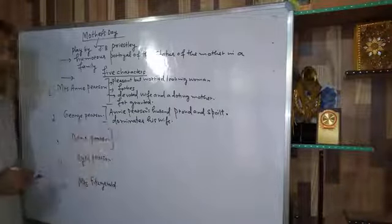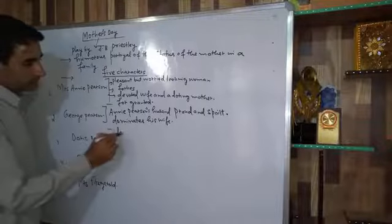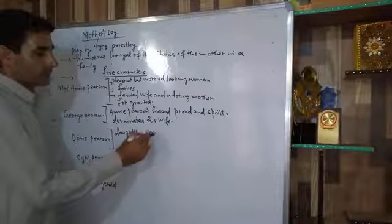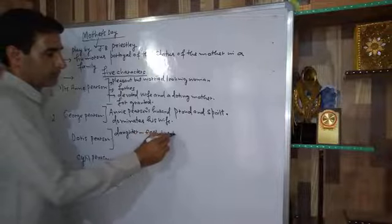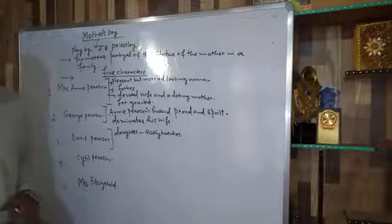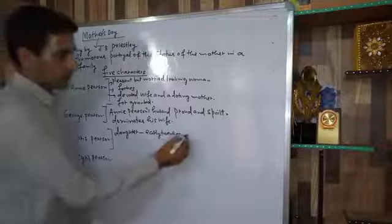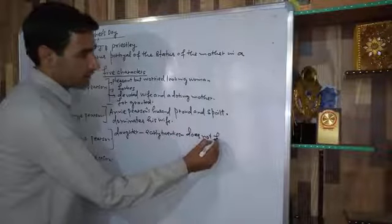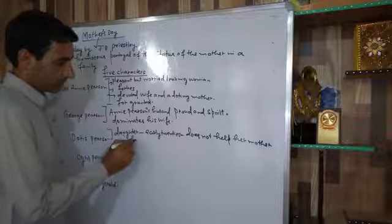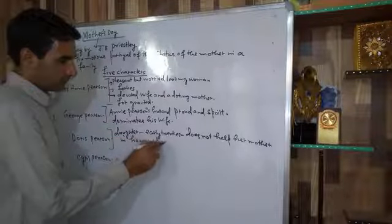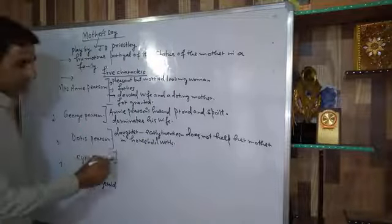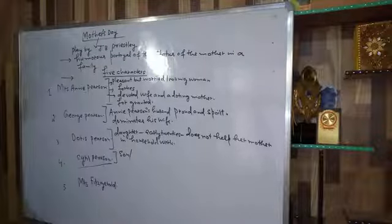Doris Pearson is Annie Pearson's daughter. She is in her early twenties. She fails to understand her mother's struggle and does not help her in household work. Cyril Pearson is Annie Pearson's son. He is also indifferent and insensitive towards his mother.